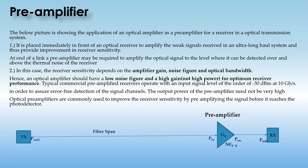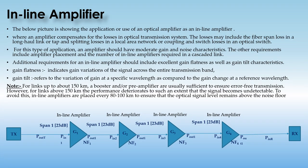The inline amplifier is used where an amplifier compensates for the losses in an optical transmission system — basically compensating the losses in the spans. These losses may include fiber span losses in long-haul systems, or tap/splitting losses in a local area network, or coupling and switching losses in an optical switch.